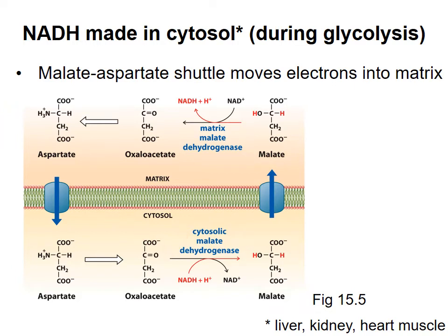Remember that pores exist in the outer mitochondrial membrane, allowing polar molecules to cross freely. So molecules like NADH in the cytosol can readily approach the inner mitochondrial membrane — the area on the bottom is labeled the cytosol in this diagram. The basic idea of this shuttle is that electrons from NADH in the cytosol are carried by malate into the matrix, where they are passed to NAD+ in the matrix. The carbons from malate are then moved back into the cytosol, where they are able to pick up more electrons and move them into the matrix.